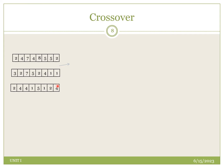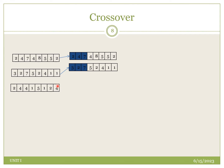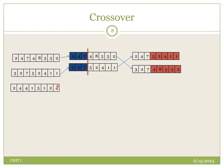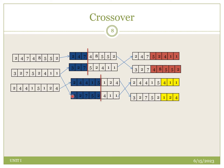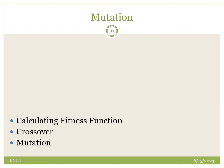In crossover, we select two populations and perform crossover at three positions. These selected populations are the parents, and the output populations are the child populations. This gives us the new populations generated after performing crossover.